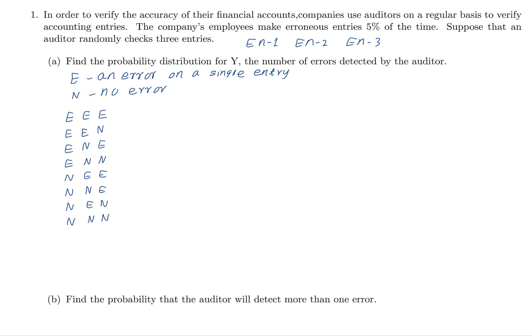Now think about y, the number of errors detected by the auditors. We need to understand the values of y. Checking each outcome: EEE has three errors; EEN and ENE and NEE each have two errors; ENN, NEN, and NNE each have one error; and NNN has zero errors. Therefore the values of y are 0, 1, 2, 3.